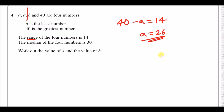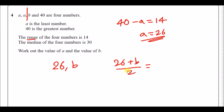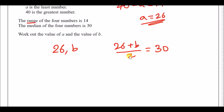The median of the four numbers is 30. The median is the middle value. Since there are four numbers, the median falls between the second and third values, which are a and b — that is, 26 and b. Add them and halve: (26 + b) / 2 = 30. Multiply both sides by 2: 26 + b = 60, so b = 34.